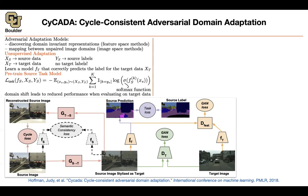You also want things to be cycle consistent. If you take the source image stylized as a target image and then generate an image back in the source domain — basically going source→target→source — the reconstructed image needs to be the same as the original. Similarly, going target→source→target must also reconstruct the same image. This is cycle consistency at the pixel level, which we saw before when covering cycle-consistent GANs.